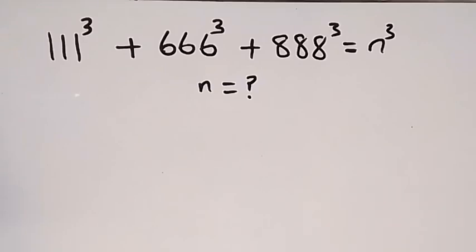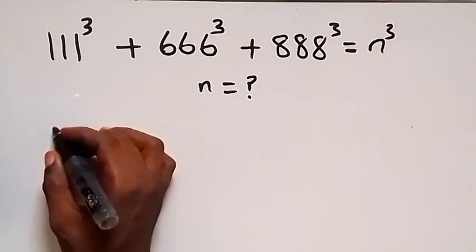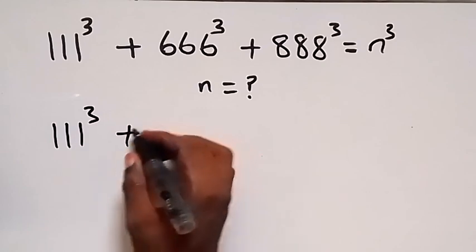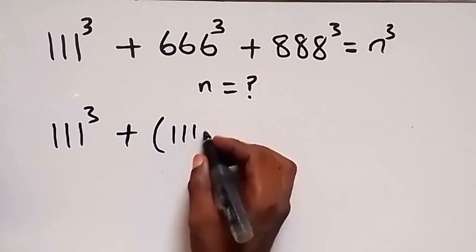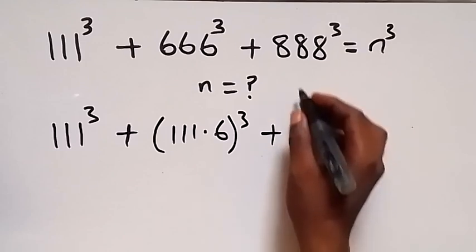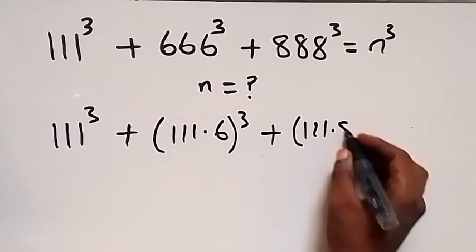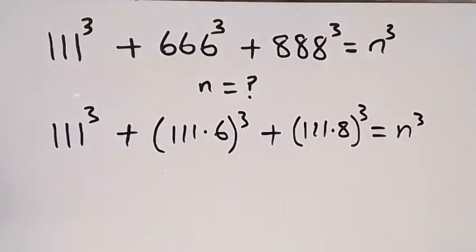Hello, you are welcome. How to solve this nice algebra problem — from here you are finding the value of n. We can write this as 111 raised to power 3, plus here we can write 666 as 111 times 6, then raised to power 3, also plus here we can write 888 as 111 times 8, then raised to power 3, equals n raised to power 3.